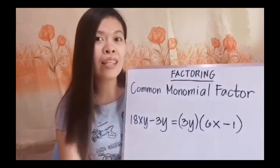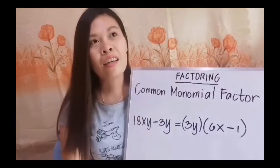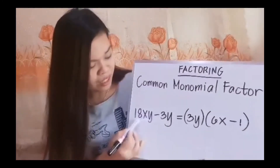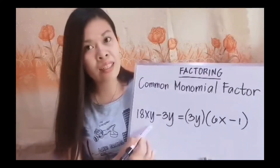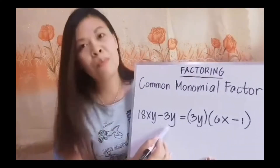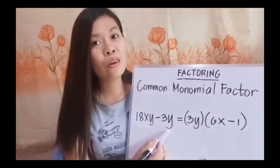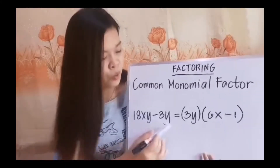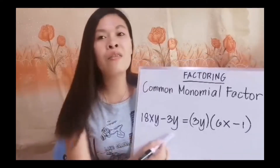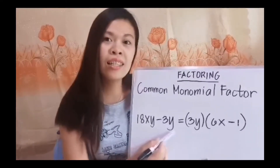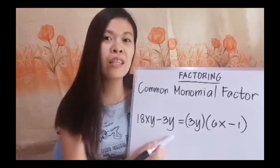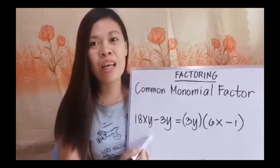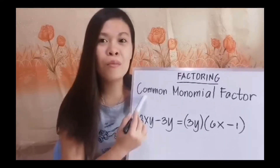Another factoring technique we discussed was factoring the difference of two squares. Let us evaluate. Is 18xy a perfect square? No. Is 3y a perfect square? It is not also a perfect square. There is a difference, yes, however we are not getting the difference of two perfect squares. Therefore, it is not an example of a difference of two squares. Rather, we can factor this by getting the common monomial factor.